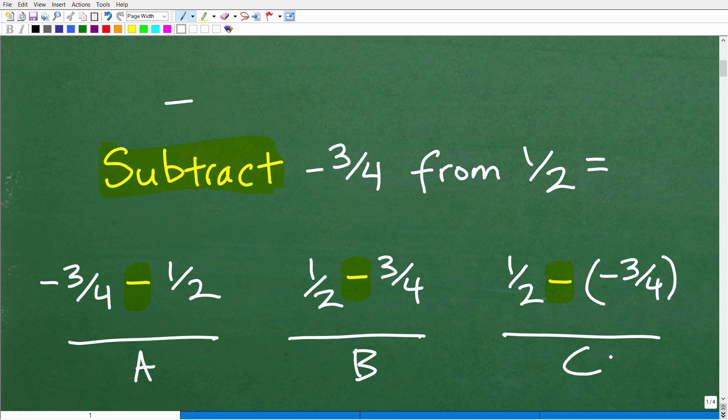So which one is it? Is it A, B, or C? I'm going to give you a second to think about this, because if you don't get this right, then anything you do beyond this point, it could be wrong. So the first part of this problem that confuses students is what does this mean? We want to subtract negative three-fourths from one-half.